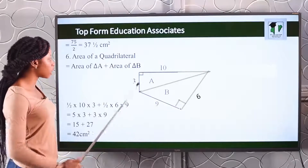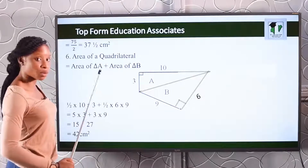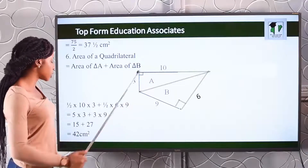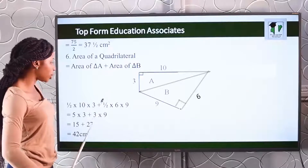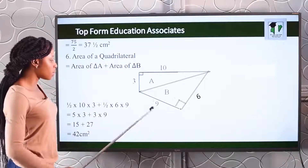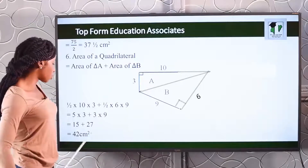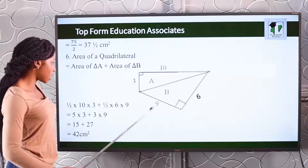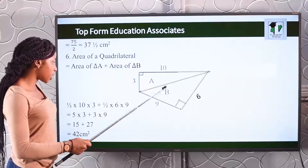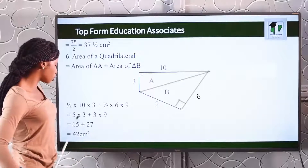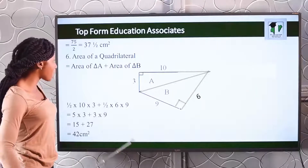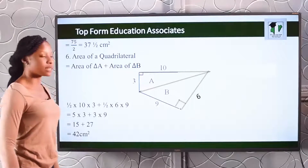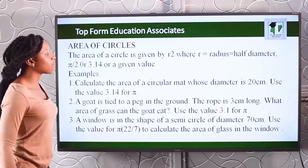We put all this into the formula. The formula for a triangle is half base times height. For the first triangle A: half of 10 multiplied by 3, plus half of 6 multiplied by 9. The area of A is 15, and the area of triangle B is 27. So the area of this quadrilateral is 42 centimeters squared.